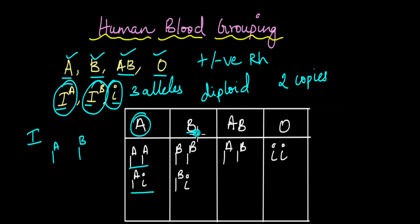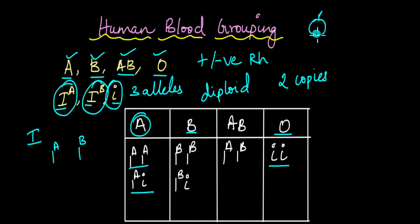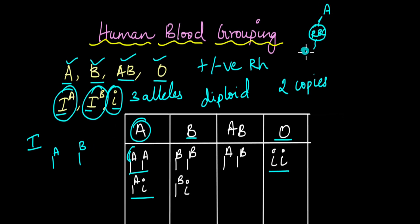The same applies for blood group B: IB/IB and IB/i. In the case of O blood group, it is both recessive alleles — small i/small i. This all has to do with the type of glycoprotein expressed on the surface of RBCs. In the presence of IA, glycoprotein A is expressed. In the presence of IB, glycoprotein B is expressed. In the case of O, no glycoprotein is expressed.